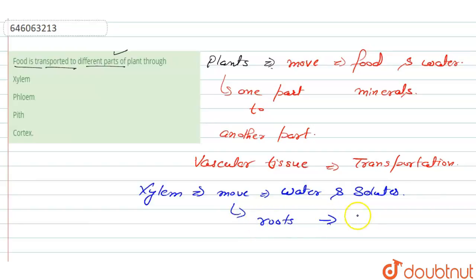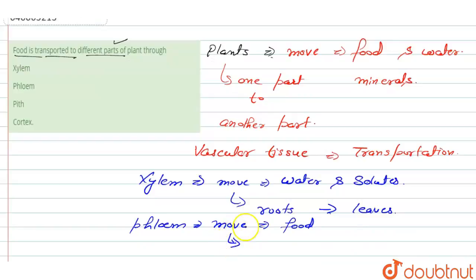And the other system is the phloem. So the phloem moves the food substances that form in the leaves and then it is transported into the rest of the plant parts.